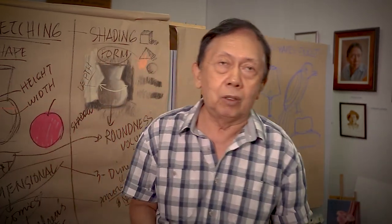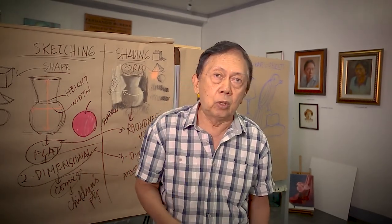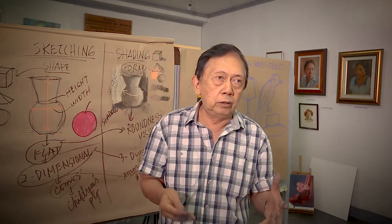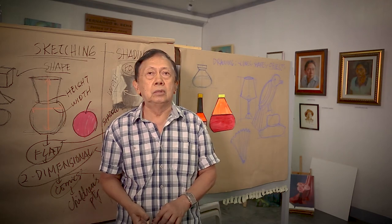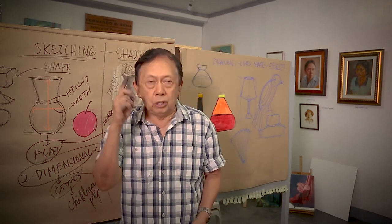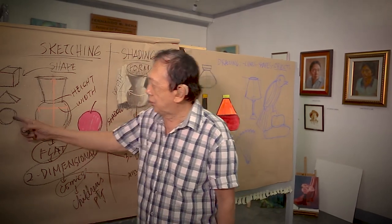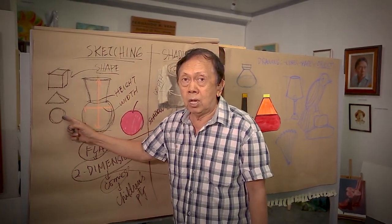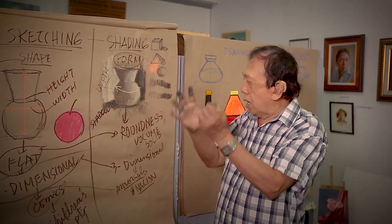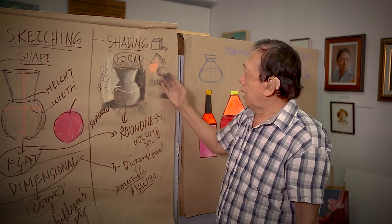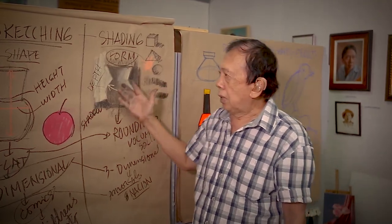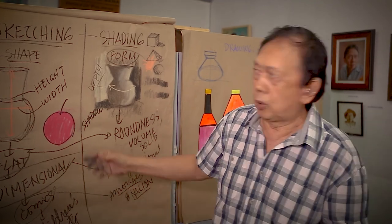Meron difference yan. Halimbawa, tatanungin ko kayo - what sentence is correct: 'The word is round' or 'the word is circle'? The word is round. Because if you will tell me the word is circle, walang shading, it is flat. But if you will tell me the word is round, it means solid siya - bilog siya, may laman, meron siyang volume. At paano natin makikita ito? Paano natin mapapalabas itong roundness volume? That is proper shading. You cannot escape from shading. Shading is very important.